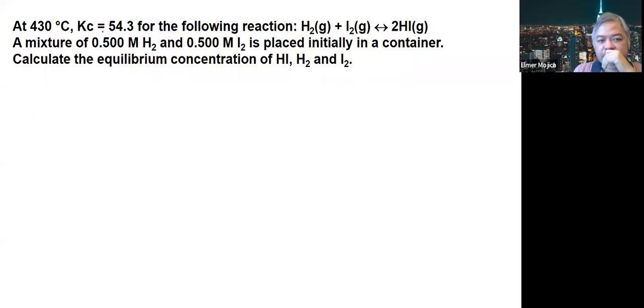At 430 degrees Celsius, Kc equals 54.3 for the following reaction: H2 gas plus I2 gas producing 2HI gas. A mixture of 0.5 molar H2 and 0.5 molar I2 is placed initially in the container. Calculate the equilibrium concentration of HI, H2, and I2.